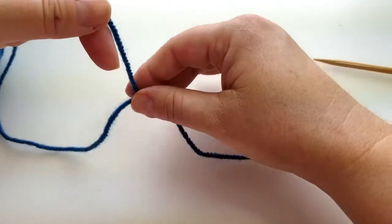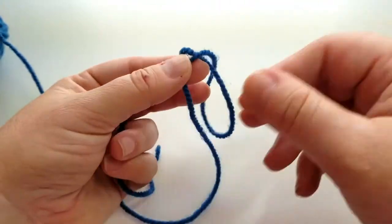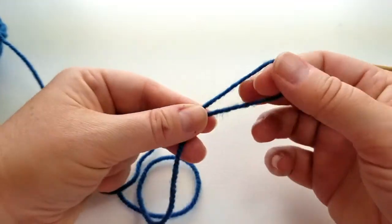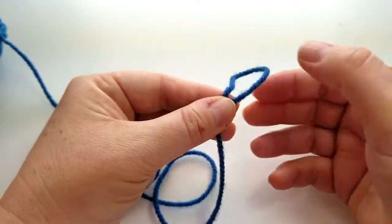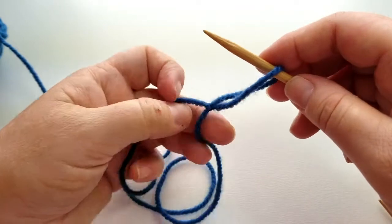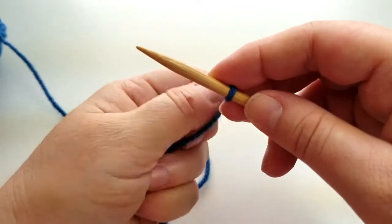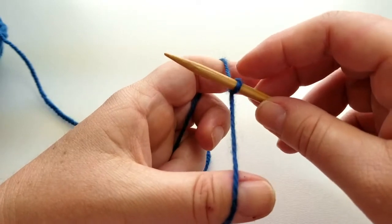And they call it a slip knot because you can literally slip it after it has been knotted. So you find the one side that you can slide. And then you can insert your needle and get the excess out of the loop.